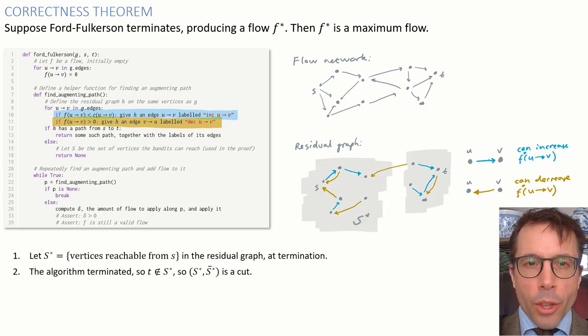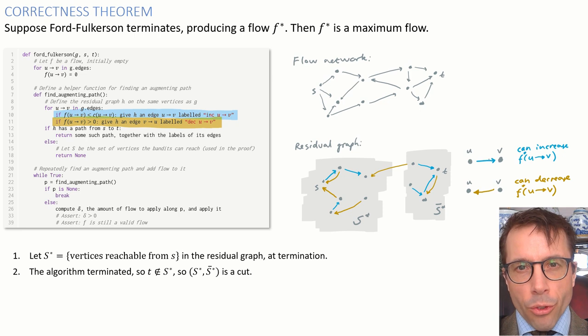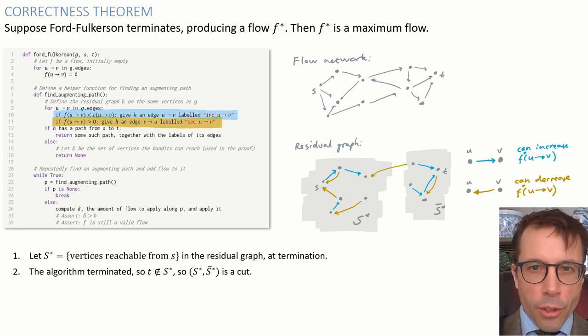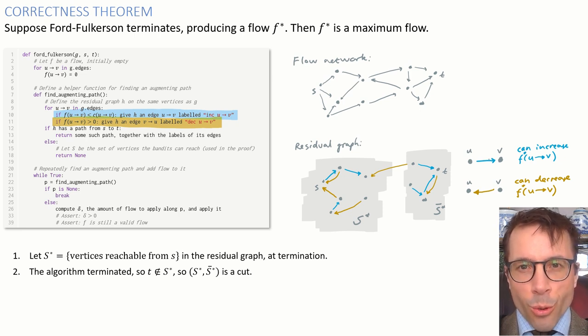Now, let's think about what the algorithm has done in its final pass. It built the residual graph, and it tried to find a path from the source to the sink, but it couldn't. Let's define S-star to be the set of vertices that the breadth-first search was able to reach. In other words, the set of vertices that are reachable from the source in the residual graph. This gives us a cut. Remember the definition of a cut? To be a valid cut, the source has to be on one side and the sink has to be on the other. Well, in this case, the breadth-first search couldn't reach the sink, so we've definitely got ourselves a cut.